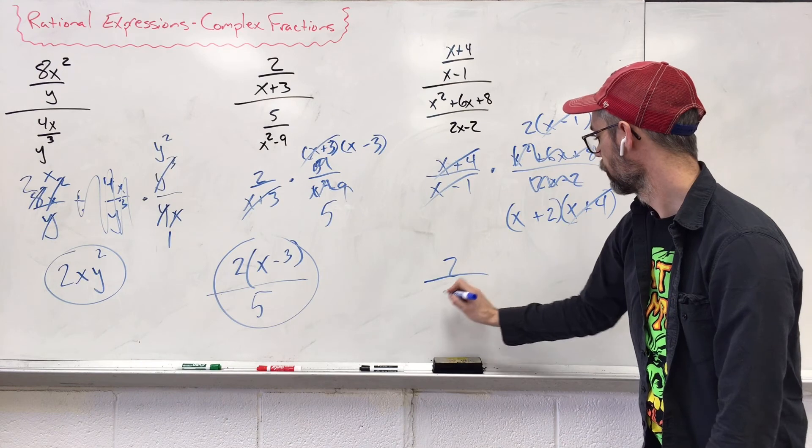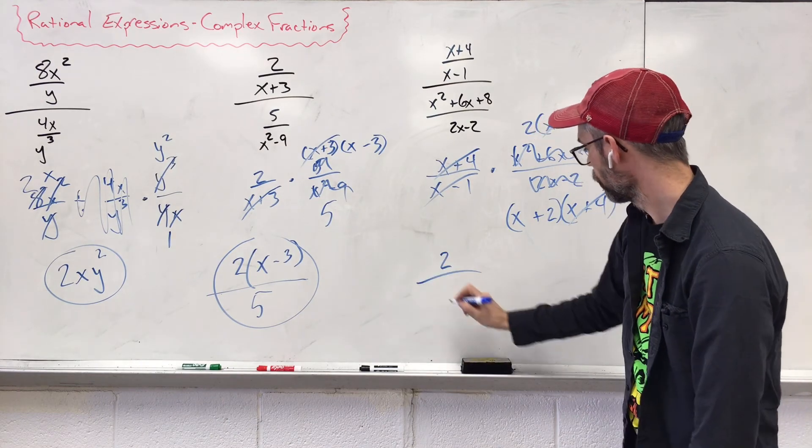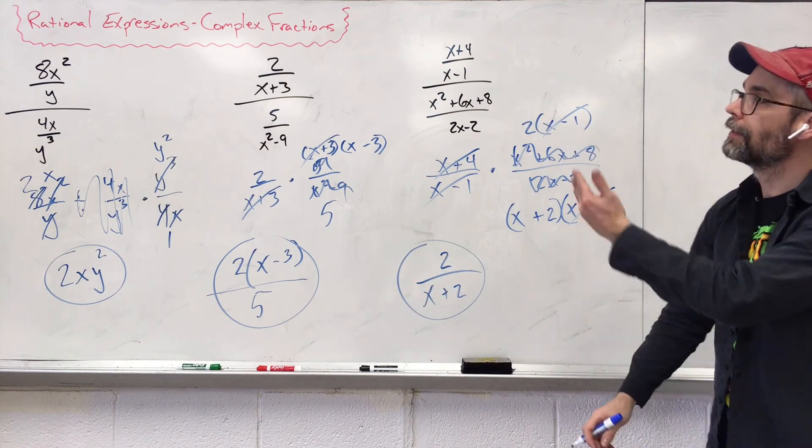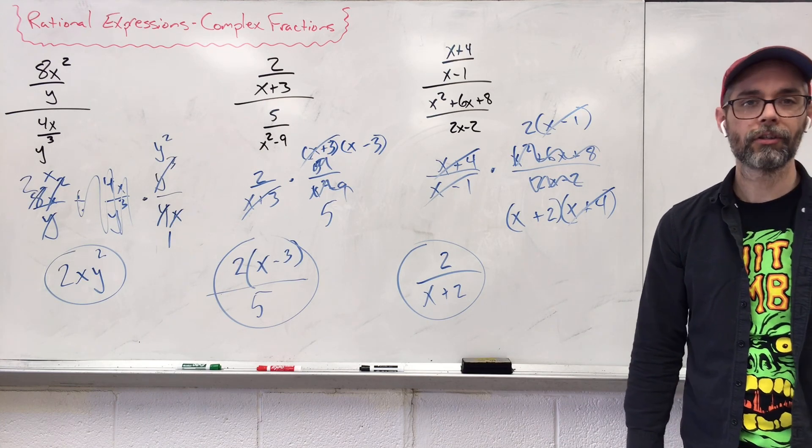So we just leave it the way it is. Two up top, we've got two up top, and on the bottom, x plus two. Can't do anything with it, so we leave it. And that is complex fractions with rational expressions.